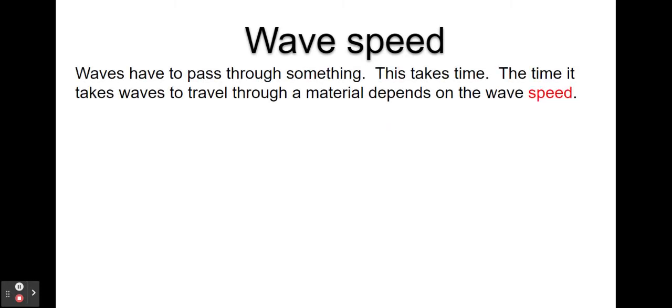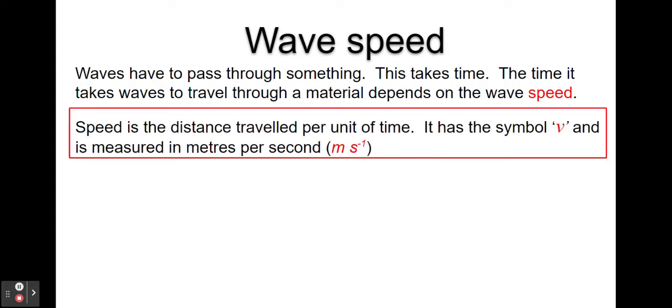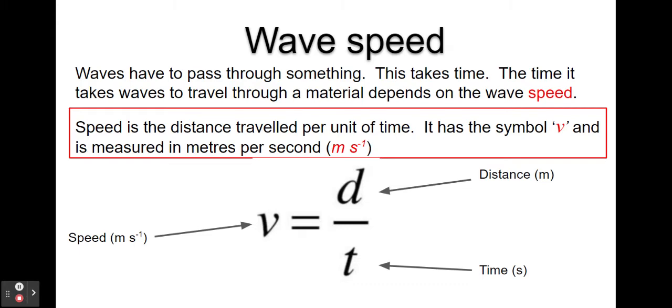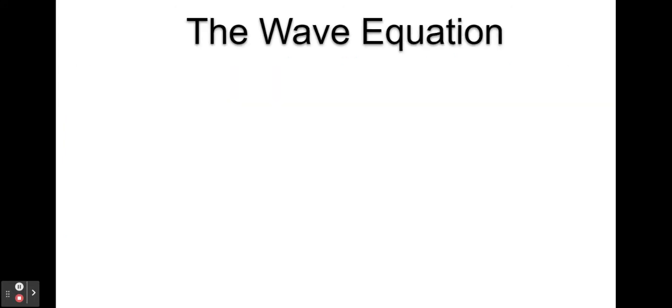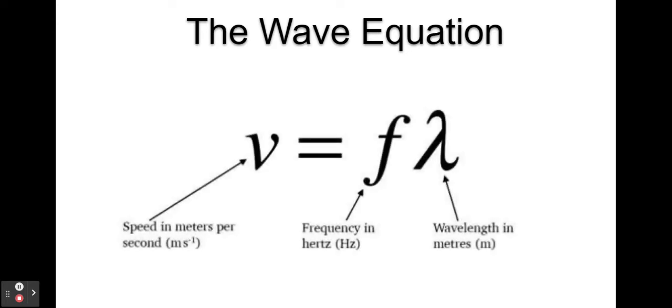Speed is defined as the distance traveled per unit of time. It has a symbol V and is measured in meters per second. We can calculate speed using the formula V equals D divided by T, where V is the speed in meters per second, D is the distance traveled by the wave in meters, and T is the time it takes in seconds. A further equation is the wave equation, which comes from the definition of the frequency and relating that to the time in the speed equals distance over time formula. The speed of a wave is actually the frequency of the wave multiplied by its wavelength.